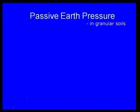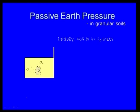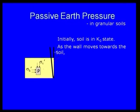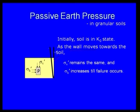Now passive earth pressure in granular soil: initially the soil is in K0 condition — at rest, with sigma-v prime and sigma-H prime. As the wall moves towards the soil, sigma-v prime remains the same while sigma-H increases until failure occurs. This is the key difference: in the active state, sigma-H decreases until failure; in the passive state, sigma-H increases until failure.